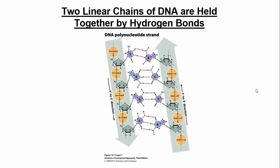Looking more in-depth at hydrogen bonding: A interacts with T through two hydrogen bonds — a relatively weak interaction. G and C interact through three hydrogen bonds — a much stronger interaction. A given hydrogen bond is very weak, but together they're a strong force. If you have a string of A-T pairs between two strands of a double helix, it's a weaker interaction. The G-C pairs give the stronger interaction.